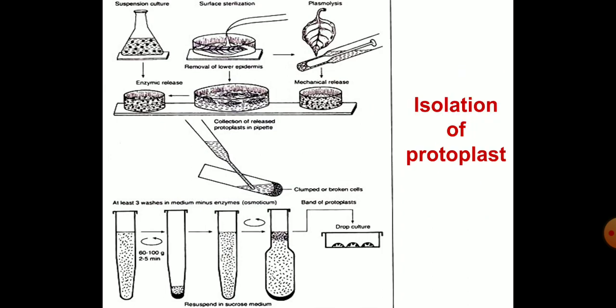Isolation of protoplasts: protoplasts can be isolated directly from different parts of a whole plant containing parenchymatous tissue, or indirectly from in vitro grown plant tissue or callus tissue.